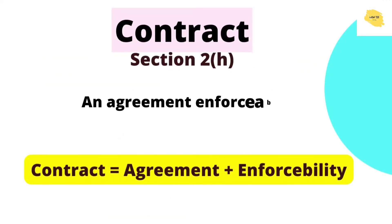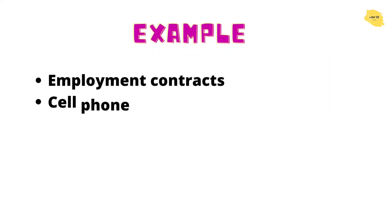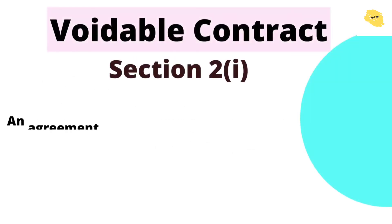Next is contract, Section 2(h). Reading the Indian Contract Act: an agreement enforceable by law is a contract. A contract requires both an agreement and enforceability by law. Examples include an employment contract, a cell phone contract, a landlord and tenant agreement, and the sale and purchase of goods or services — these can go to court. These are valid contracts, not void.